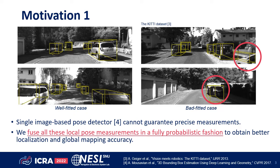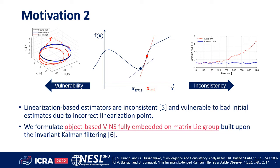It is known that linearization-based estimators are inconsistent and vulnerable to bad initial estimates due to the incorrect linearization point. This motivates us to formulate object-based VINS fully embedded on matrix Lie groups, which is closely related to invariant Kalman filtering.